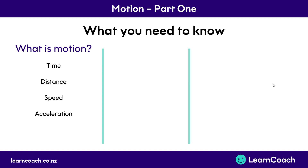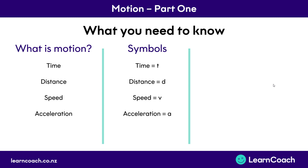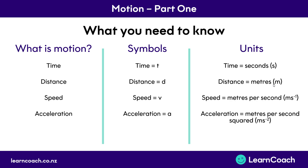So what do you need to know from this video? Well, you need to know there are four main concepts that make up motion: time, distance, speed, and acceleration. You need to know their symbols because this is how they appear in physics equations — so time is shown by a t, distance by a d, speed by v, and acceleration by a. And lastly, you need to know the units they are always used in: time is in seconds, distance in meters, speed in meters per second, and acceleration in meters per second squared. Thanks for watching guys, and I'll see you in the next video.